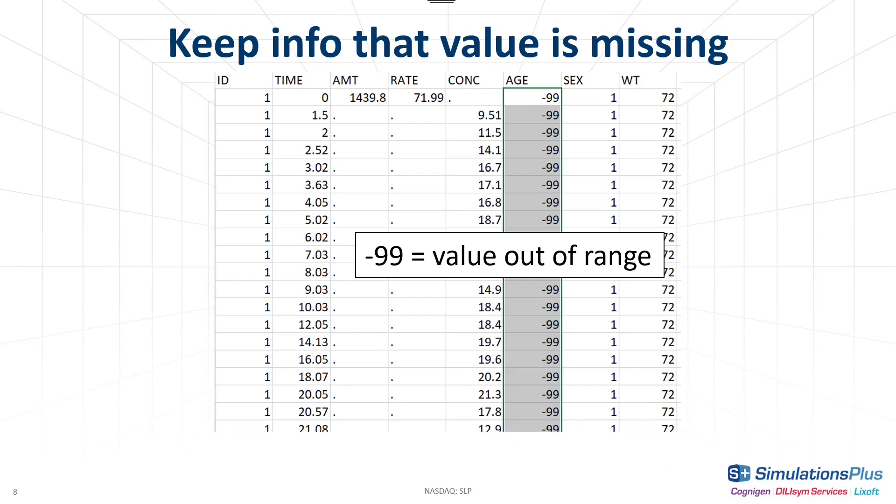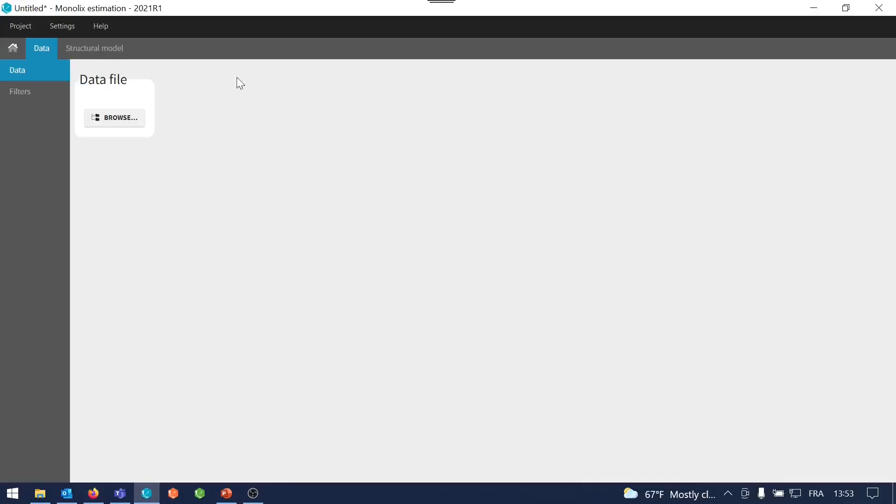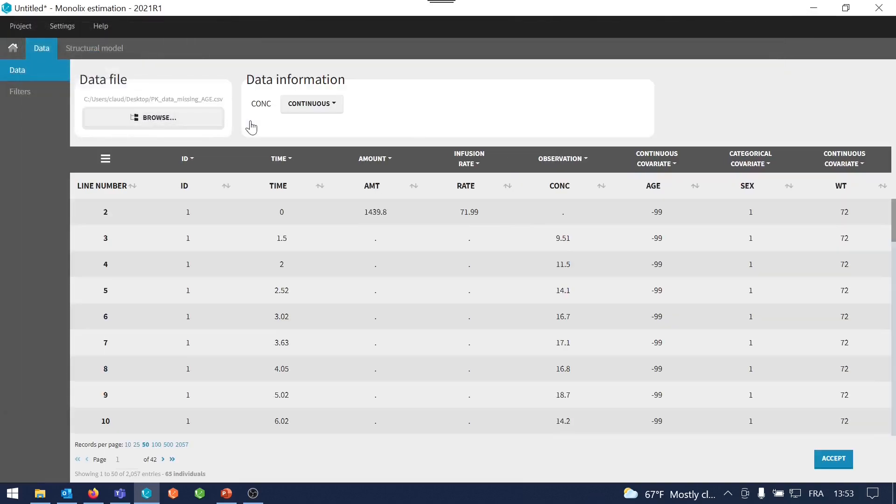Let me now show you how we can replace the minus 99 value by an imputed value directly in Monolix. I create a new project with the dataset with the missing covariate values.